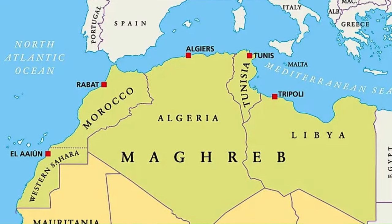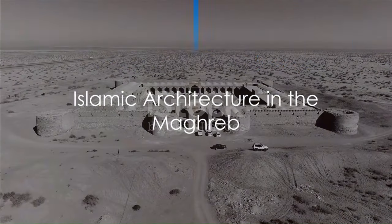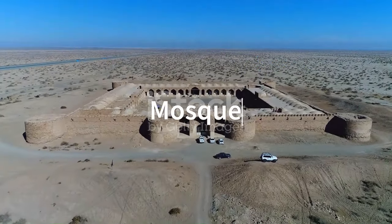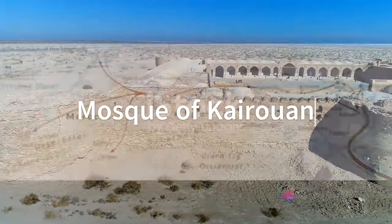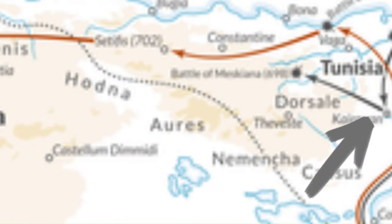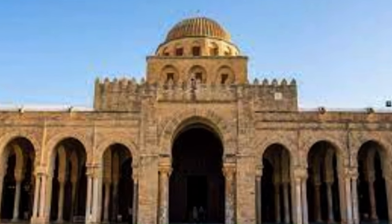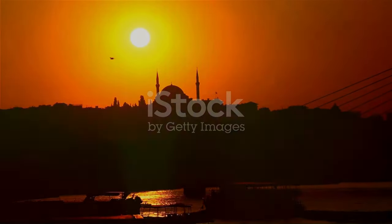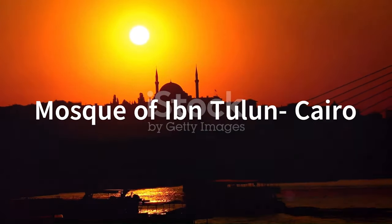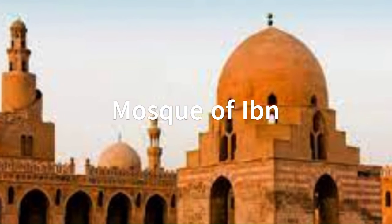The Maghreb, encompassing northern African regions, adopted Islamic architecture in structures like the Great Mosque of Kairouan in Tunisia, characterized by horseshoe arches and decorative motifs. Egypt, with its rich history, witnessed the construction of landmarks like the Mosque of Ibn Tulun in Cairo, showcasing unique spiral minarets and open courtyards.